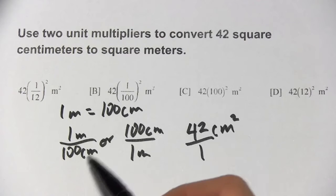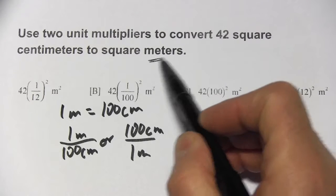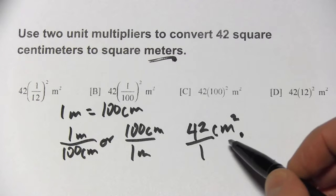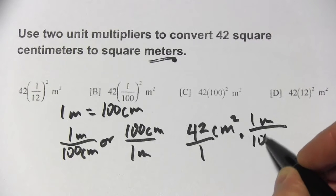And what we do is we choose the one that has the unit that's up here on the bottom. So since centimeters are on top here, we want centimeters on the bottom there. We want to cancel those centimeters so that we're left with meters, which is what we want to get to. So we're going to multiply this by 1 meter over 100 centimeters.